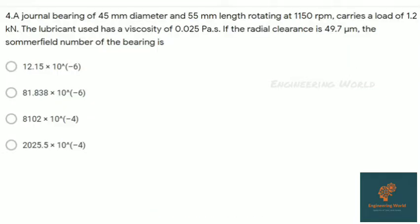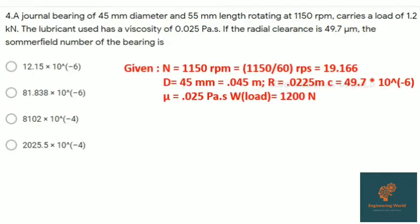Next question: A journal bearing of 45 mm diameter and 55 mm length rotating at 1150 rpm carries a load of 1.2 kN. The lubricant used has a viscosity of 0.025 Pa·s. Radial clearance is 49.7 micrometers. What is the Sommerfeld number? N is given 1150 rpm. In Sommerfeld number, we have to find it in revolutions per second, so divide by 60 to get 19.166.